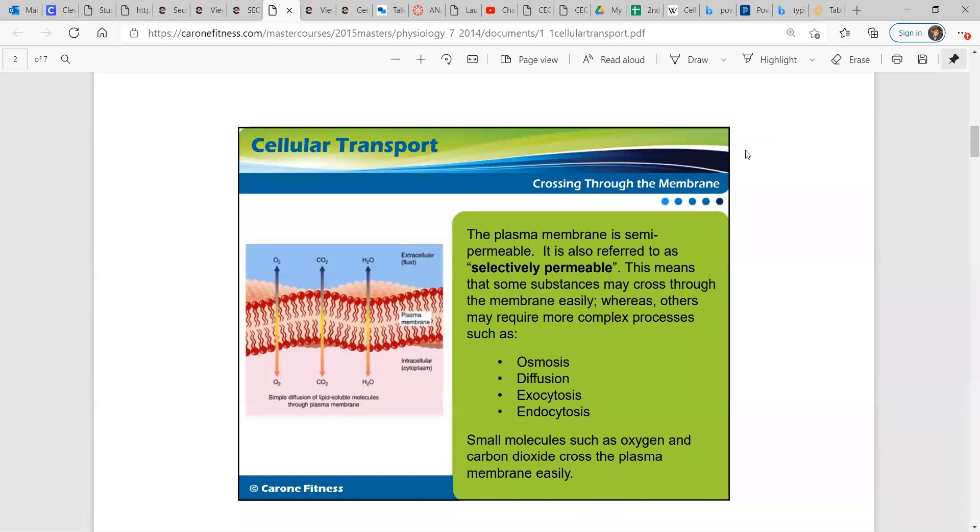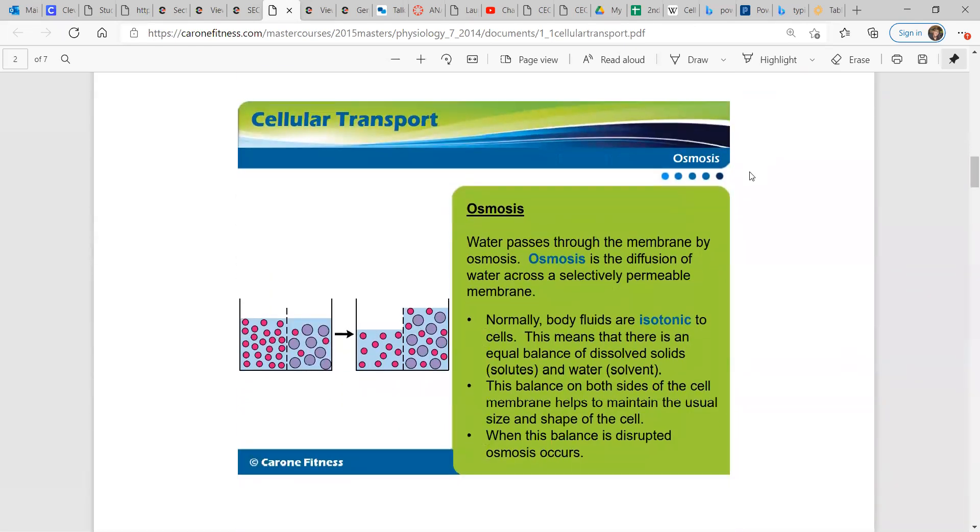Small molecules, such as oxygen and carbon dioxide, cross the plasma membrane easily. Water passes through the membrane by osmosis. Osmosis is the diffusion of water across a selectively permeable membrane.